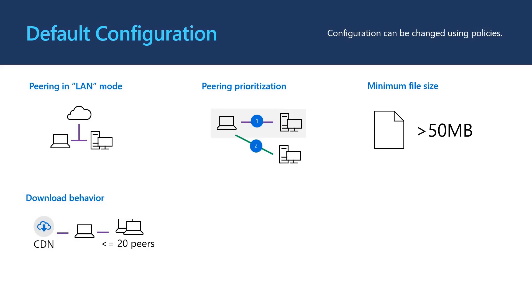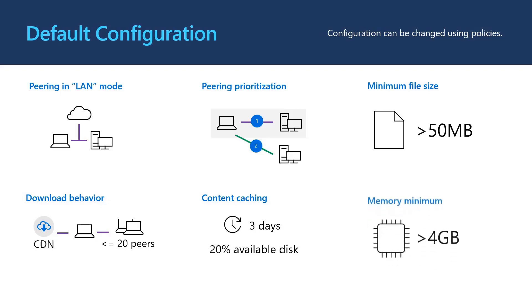Devices will only try to source content from other peer devices if the requested content is over 50 MB. Content will be downloaded in parallel from HTTP sources and up to 20 peers. Devices must cache content for it to be available to other peers. By default, content is cached for up to 3 days and can consume up to 20% of available disk space. Devices will only share content with other devices with more than 4 GB of RAM.